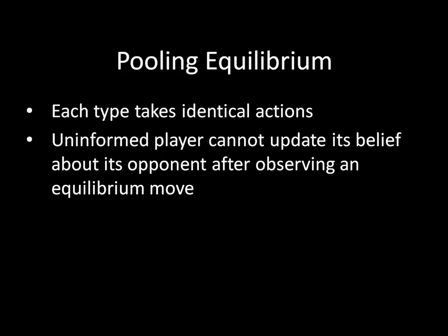As a consequence of that, the uninformed player — Player 2 in our game — cannot update her belief about her opponent after observing the equilibrium move. The reason is that they're both taking identical actions. The strong type is doing exactly the same thing as the weak type, and vice versa. So you don't learn anything from seeing a hide strategy being played, because both the strong and the weak type are supposed to be doing that in a pooling equilibrium.